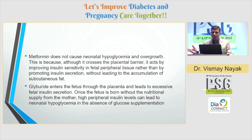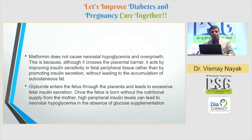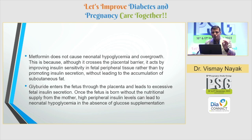What is the reason? Metformin does not cause neonatal hypoglycemia and overgrowth. Although it crosses the placental barrier, it acts by improving insulin sensitivity in fetal peripheral tissue rather than promoting insulin secretion. On the other hand, glyburide enters the fetus through the placenta and leads to excess fetal insulin secretion, so once the fetus is born without nutritional supply from the mother, high peripheral insulin can lead to neonatal hypoglycemia.